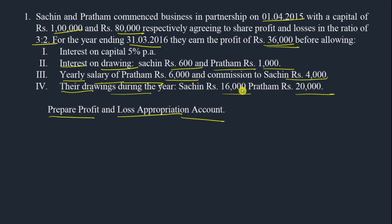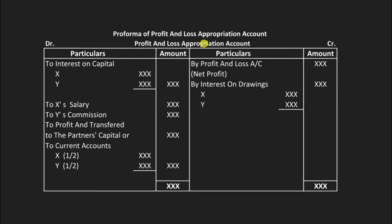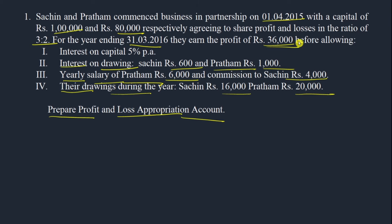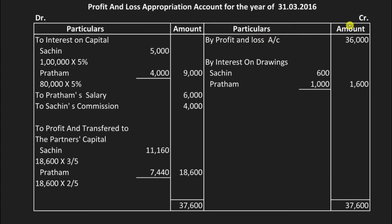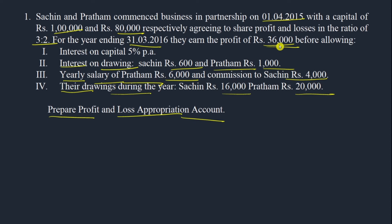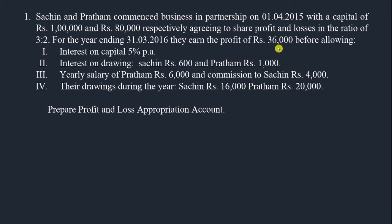We are asked to prepare a Profit and Loss Appropriation Account. Before starting, let's look at the format — as covered in the previous class. We start with the credit side: write 'Profit and Loss Appropriation Account for the year ending 31st March 2016,' then debit, credit, particulars, and amount columns. On the credit side, enter 'By Profit and Loss' — the net profit of 36,000 rupees.